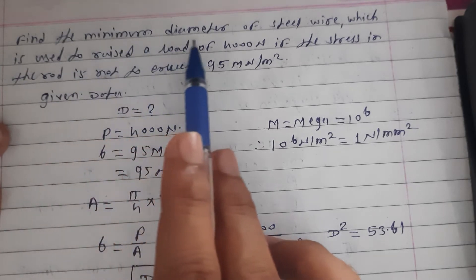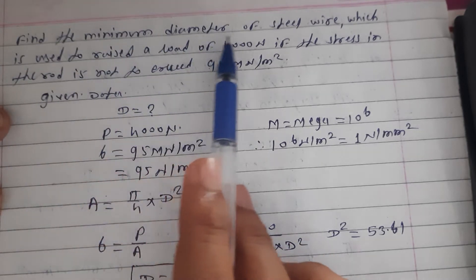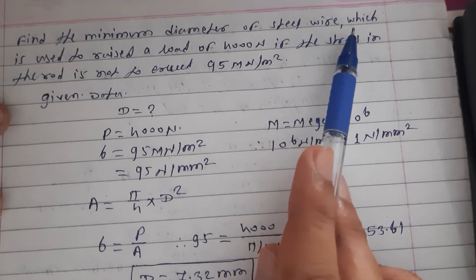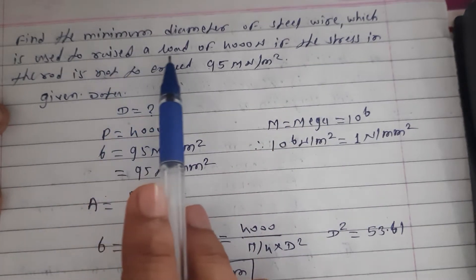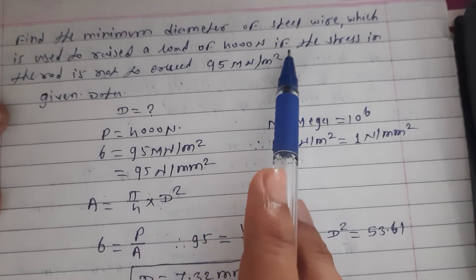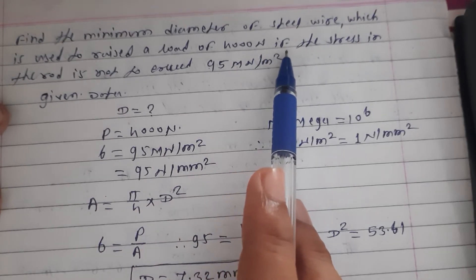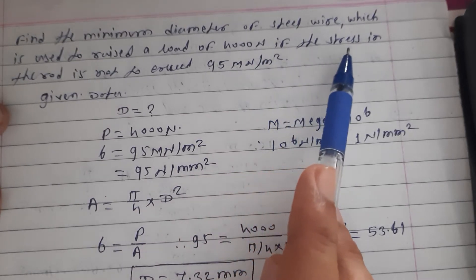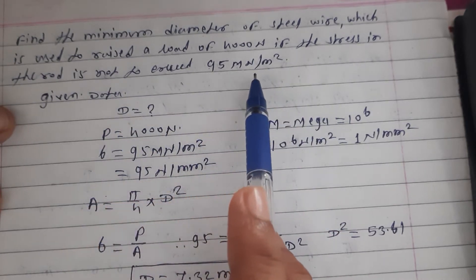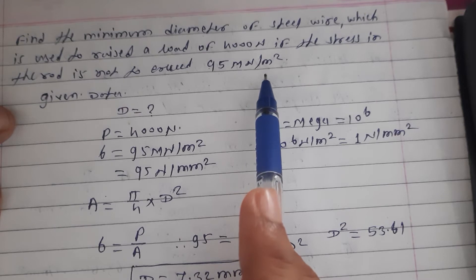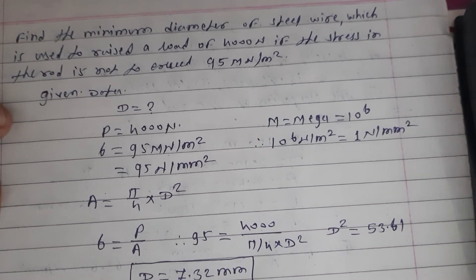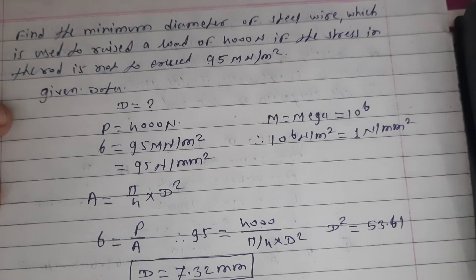First we will see the problem statement. Find the minimum diameter of the steel wire which is used to raise a load of 4000 newton — load P is equal to 4000 newton. If the stress in the rod is not to exceed 95 mega newton per meter square, stress is given as 95 mega newton per meter square.